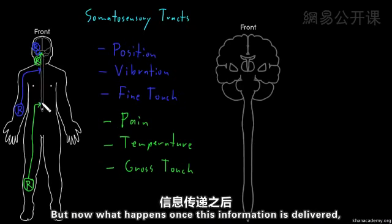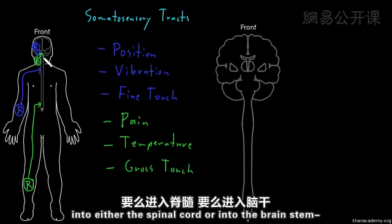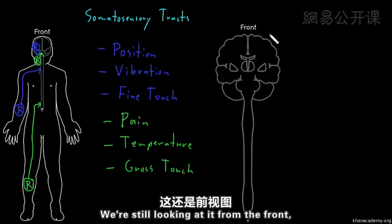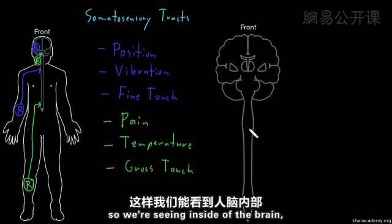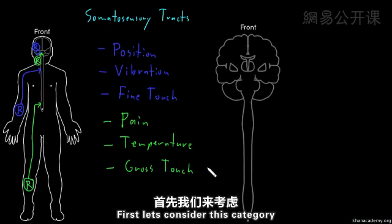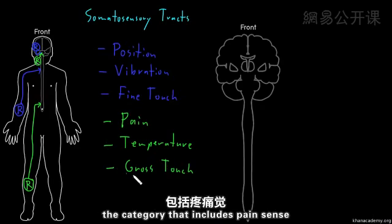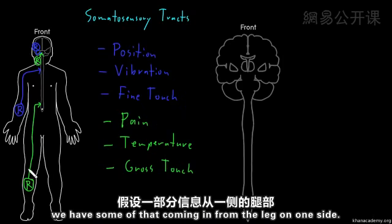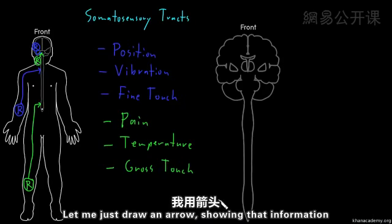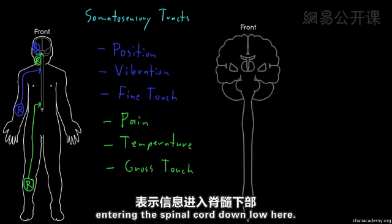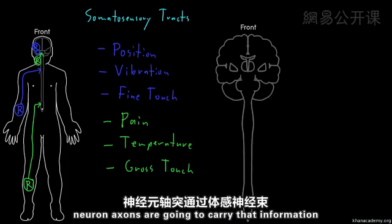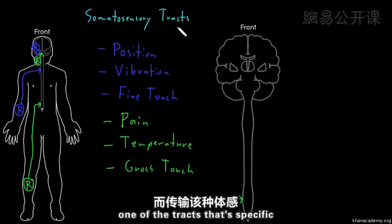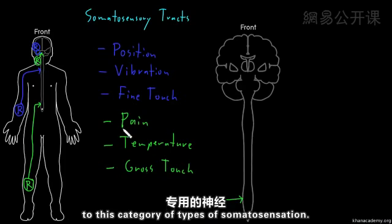Now, what happens once this information is delivered into either the spinal cord or the brainstem? Looking at a larger illustration of the brain and spinal cord from the front, cut open to see the inside, let's consider the category that includes pain sense, temperature sense, and gross touch sense. That information entering the spinal cord from the leg will be carried up to the brain by neuron axons in one of these somatosensory tracts specific to this category.